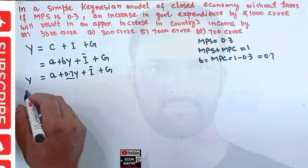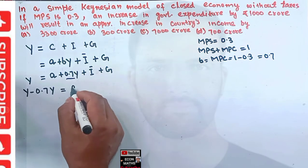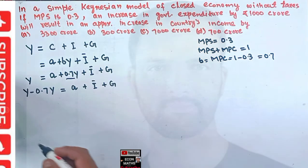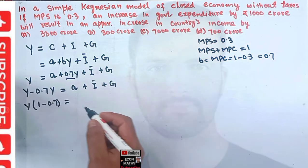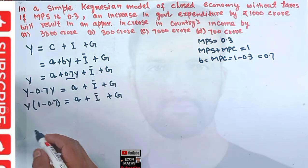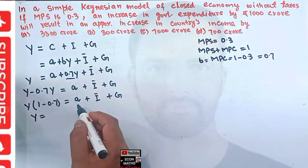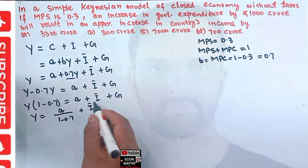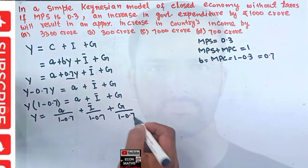Transposing 0.7Y to the left-hand side: Y minus 0.7Y = a + I-bar + G. Factoring Y common: Y times (1 minus 0.7) = a + I-bar + G. Transposing (1 minus 0.7) to the right-hand side: Y = a/(1 minus 0.7) + I-bar/(1 minus 0.7) + G/(1 minus 0.7).